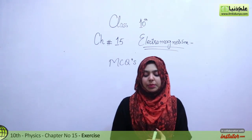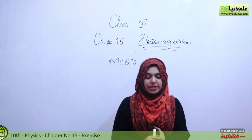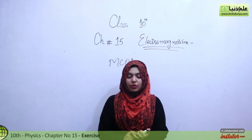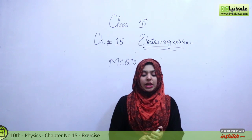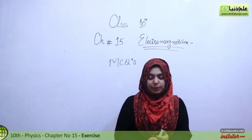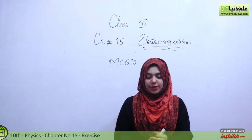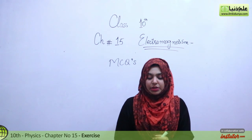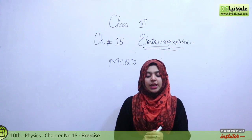Number 1 is: which statement is true about the magnetic poles? Number A is unlike poles repel, number B like poles attract, number C magnetic poles do not affect each other, and number D a single magnetic pole does not exist.